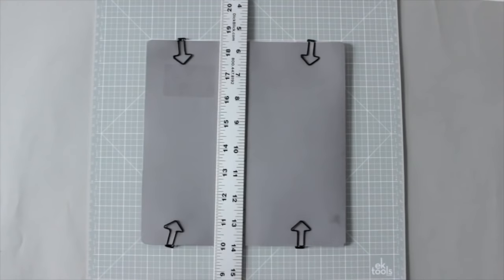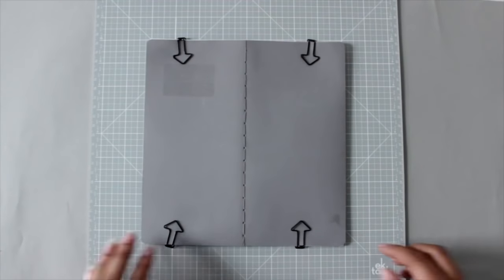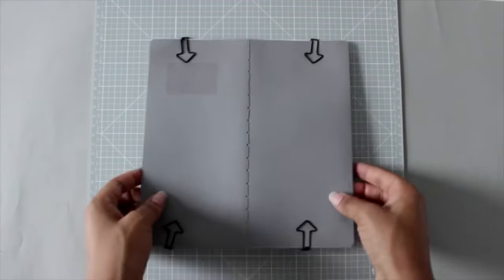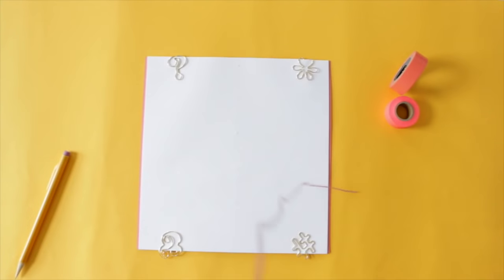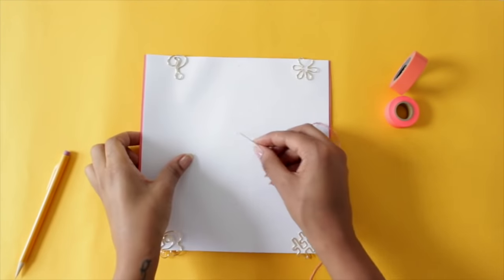Going back in with a ruler and an awl you're going to put holes into your cover going about every half of an inch. Make sure that you're going all the way through to the other side and if you don't have an awl just use a thumbtack.